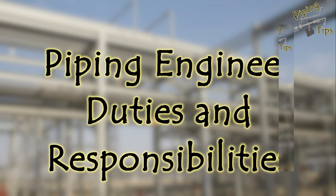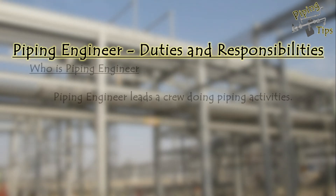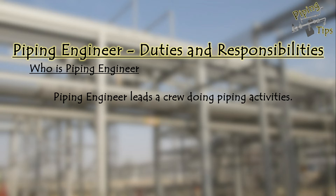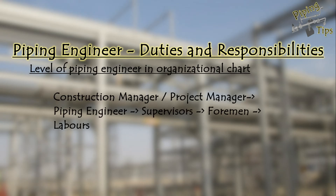Then let's get started. In this episode we are looking at who is a piping engineer and what are his roles and responsibilities. One line about the piping engineer: a piping engineer is the one who leads the crew doing the piping activities at site — who controls the piping activities, who gives direction to the crews, who arranges the material for the activities. Regarding the position of piping engineer in an organizational chart, it is almost like this.